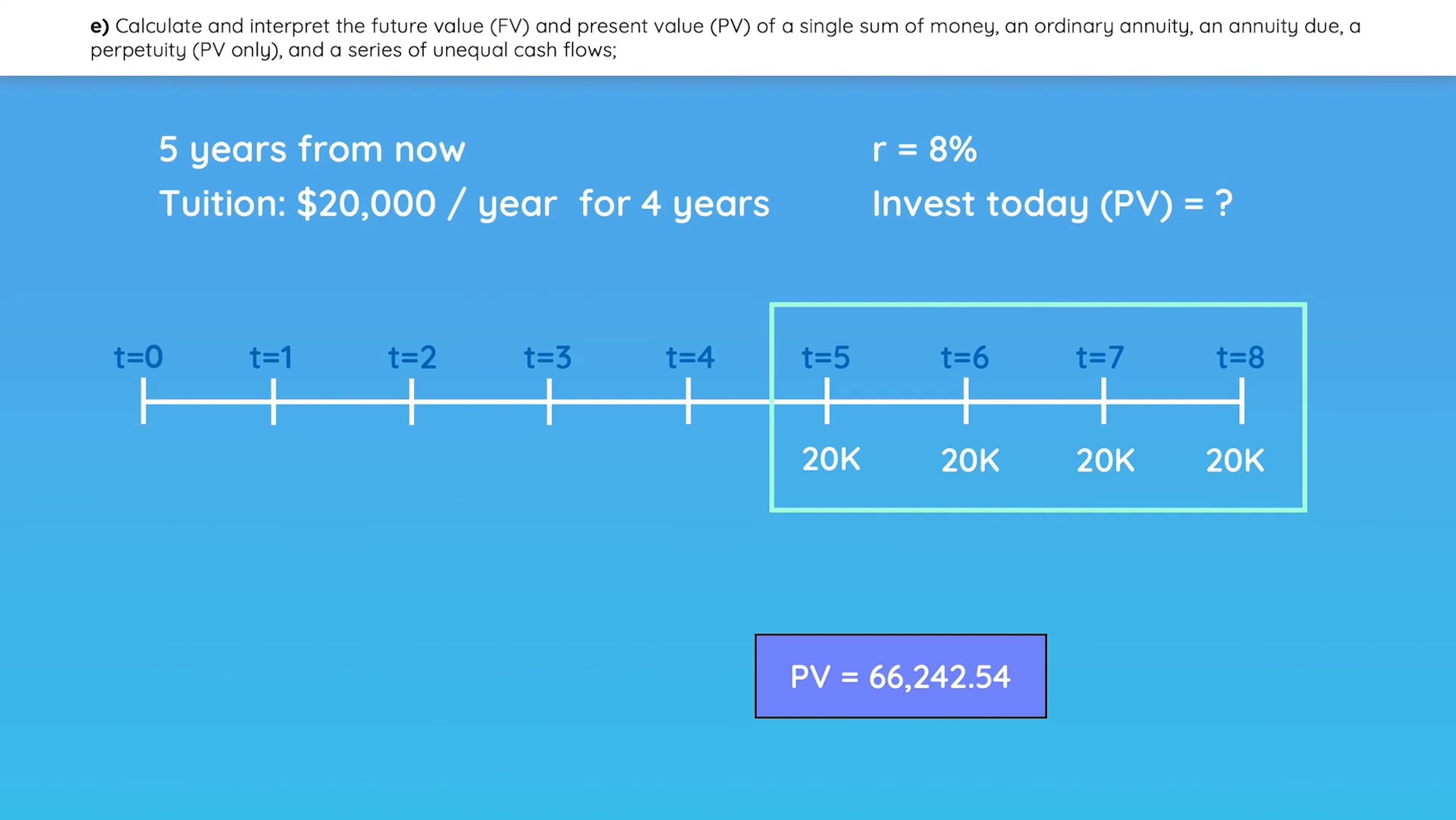Now, where in the timeline would you place this present value? Remember that the calculator gives you the present value at one period before the first payment. So let's place it at time 4, which is one period before the first cash flow is due.